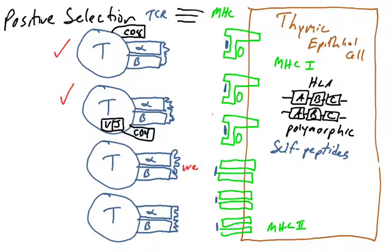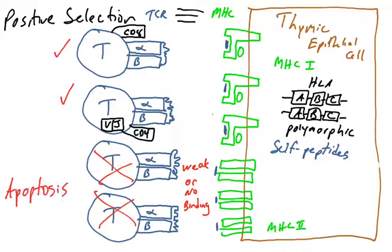These two T cells have undergone positive selection and get to survive. But the two bottom T cells use their T cell receptors, check all the MHCs, and bind none of them — weakly or not at all. They go through receptor editing, change their alpha gene, pick another V and J, make a new alpha protein, check all the MHCs again, and still have weak to no interaction with any MHCs. That means they will never check any of your MHCs if released into the body, so they're of no use. These cells die by apoptosis — they did not survive positive selection.